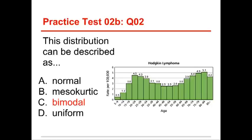It's not normal because that means a bell curve which has only one mode. A bell curve is unimodal. Mesokurtic is also a descriptive term for a bell curve. It has to do with how broad the top is relative to the other things. And uniform is totally flat across the top. So none of those are true. This one is bimodal because it has two modes or two most frequently occurring scores.